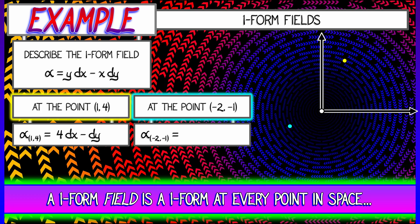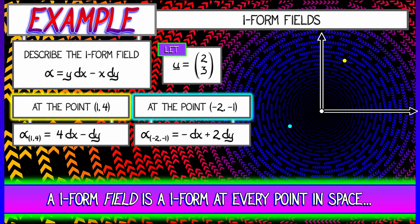But if I change the location, if I move to the point (-2, -1), then my one-form field evaluates to -dx + 2dy. So I get different one-forms when I evaluate the field at different locations.